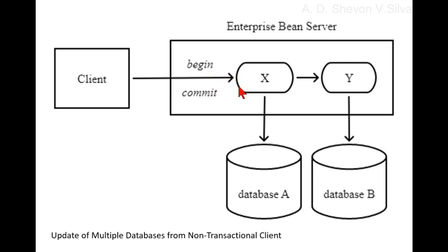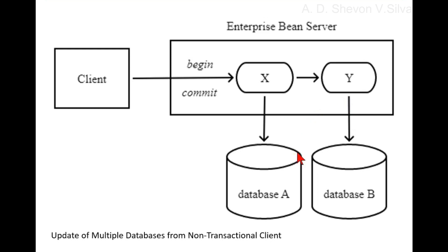Bean X's work is performed in the context of the transaction. Then X calls another enterprise bean Y. The work performed by Y is also automatically included in the transaction, subject to the transaction attributes of the other bean's interface. The container automatically commits the transaction when X returns a reply to the client.